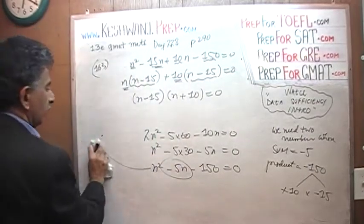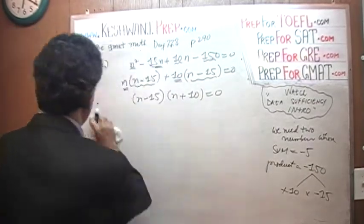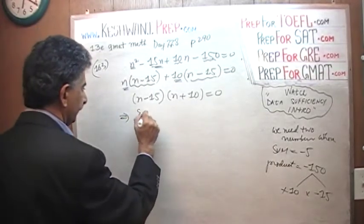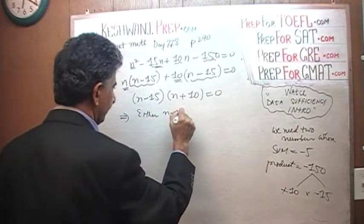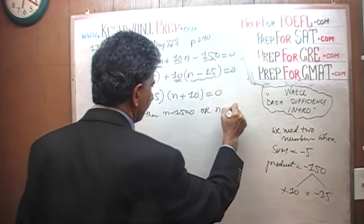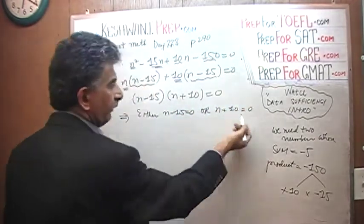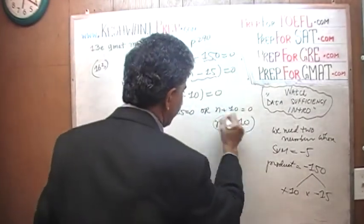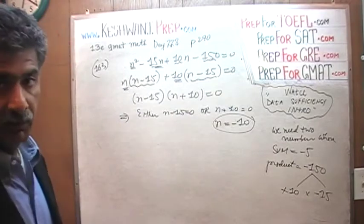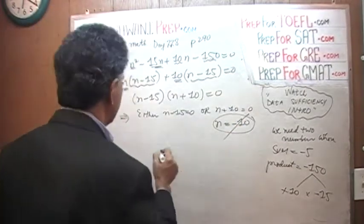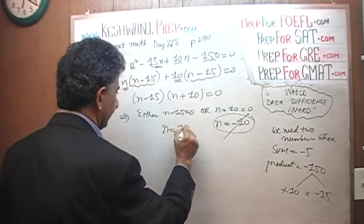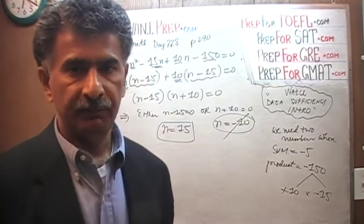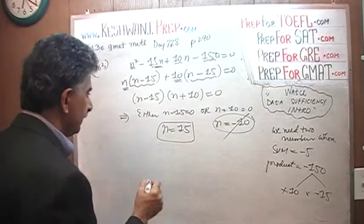Which implies, because their product is 0, that implies that either N minus 15 is equal to 0 or N plus 10 is equal to 0. If N plus 10 happens to be 0, N would have to be negative 10. And of course, N cannot be negative 10 because we are talking about number of people. That's irrelevant. N equals 15. There are 15 people in the club. 15 people in the club. They each contributed $4.